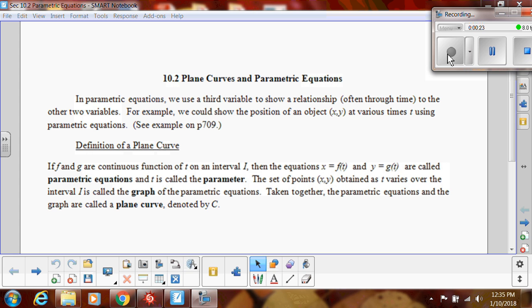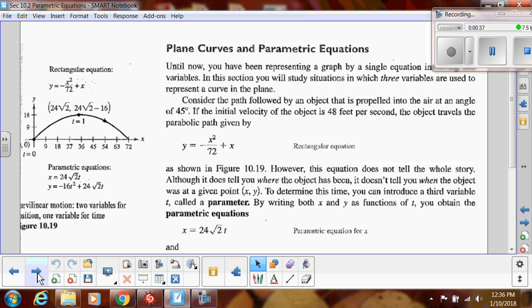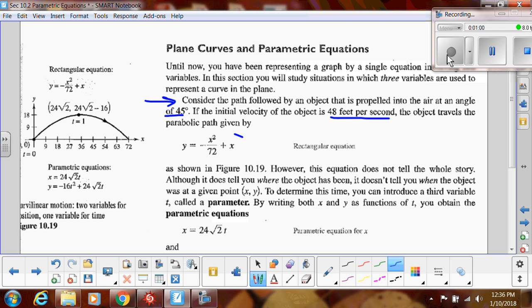All right, so remember, in parametric equations, we use a third variable to show relationship. Often, that third variable is t, time, of the other two variables. So I want to show you in your book. This is on page 709. This is an example that the book gives. So normally, if we consider a path followed by an object propelled into the air at an angle of 45 degrees with an initial velocity of 48 feet per second, we have this parabolic path. So this is our normal physics equation that we use, and that's our rectangular equation.